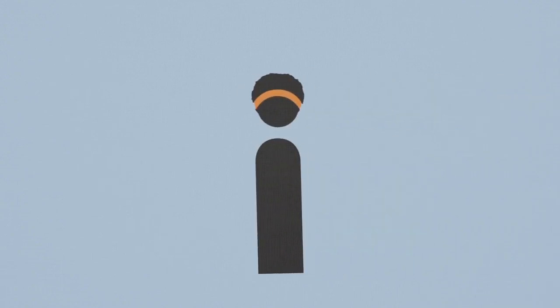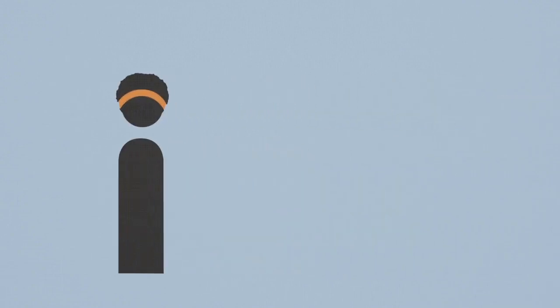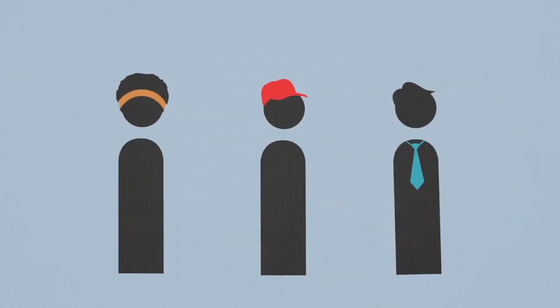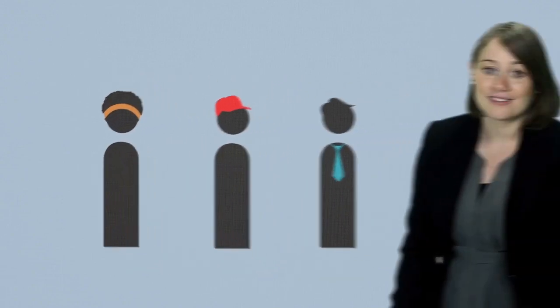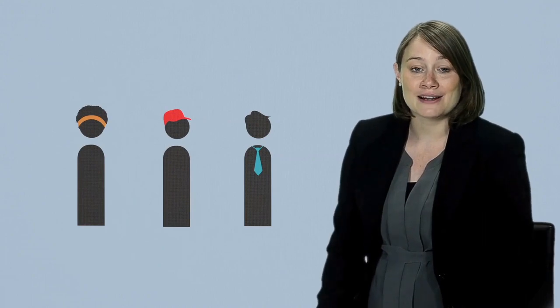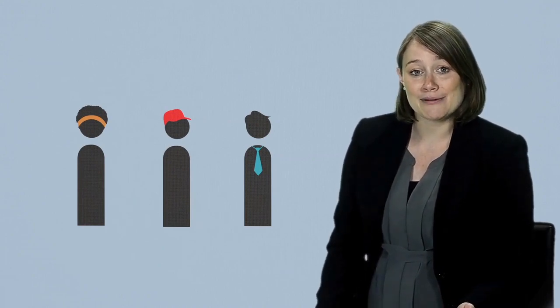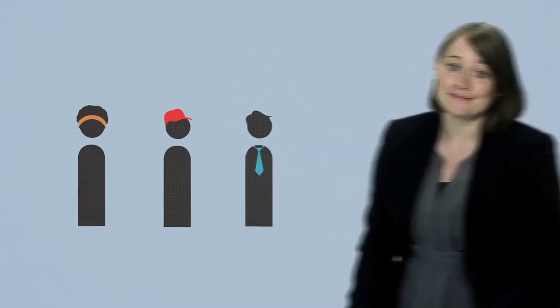Voting is supposed to be about getting what the majority wants, but that's not always the way it works. Let's imagine that you and your two friends, Jim and John, are on your way home from a party, and the three of you want to get something to eat before you head home.